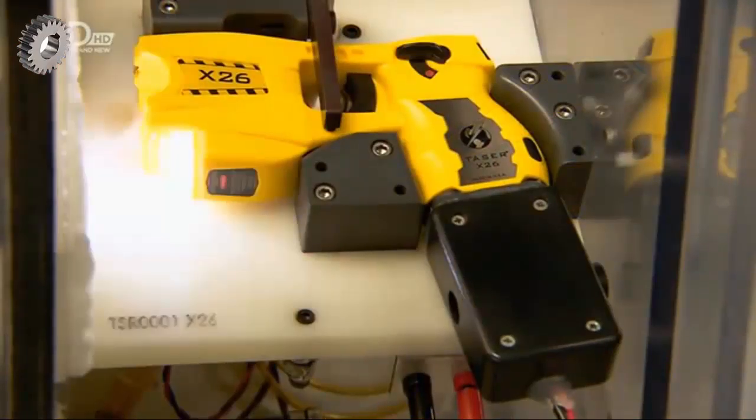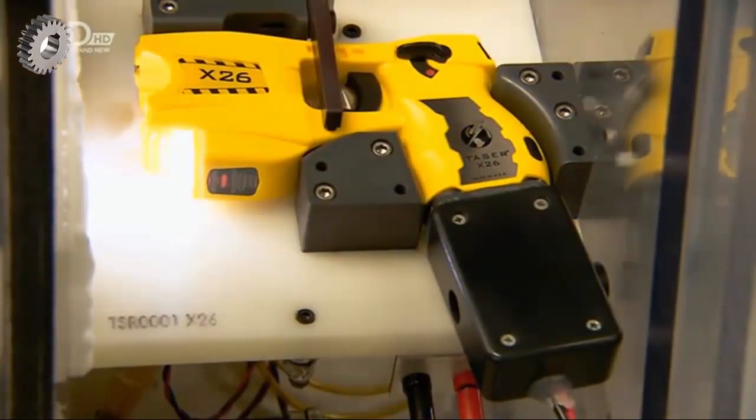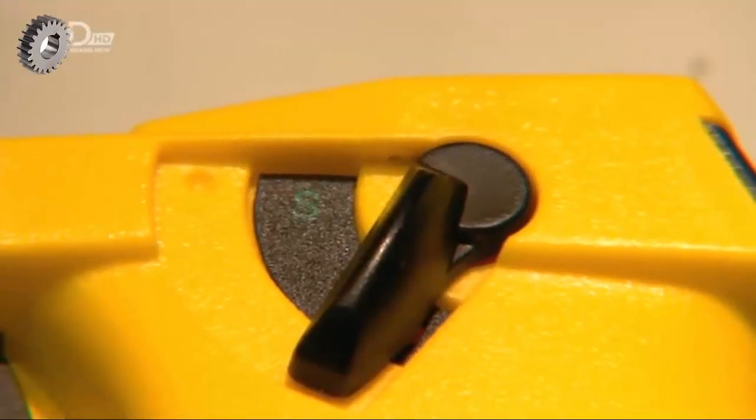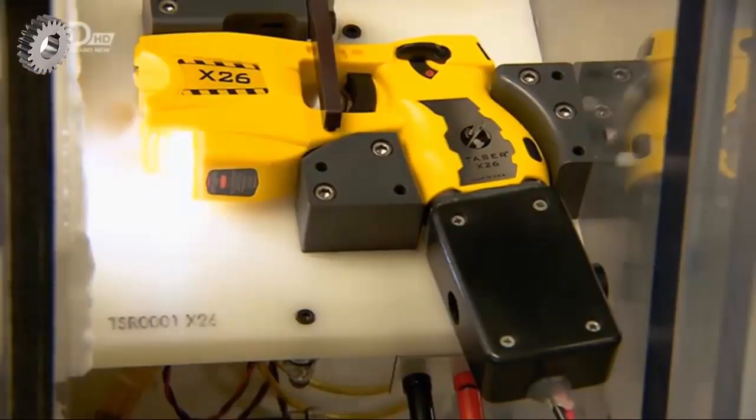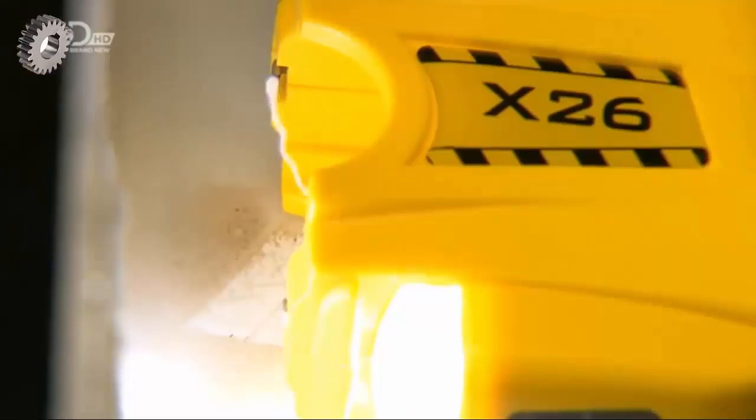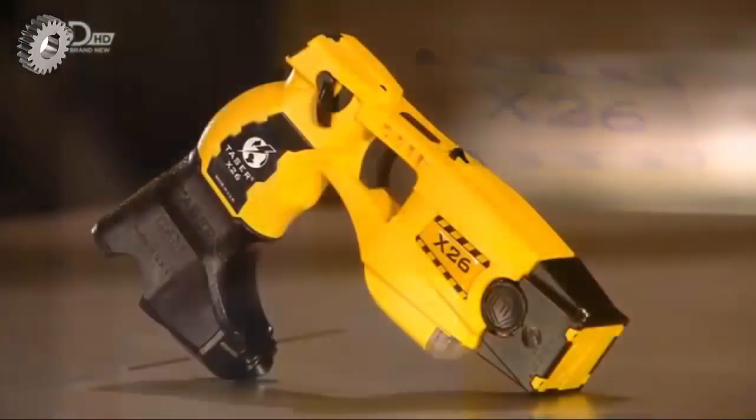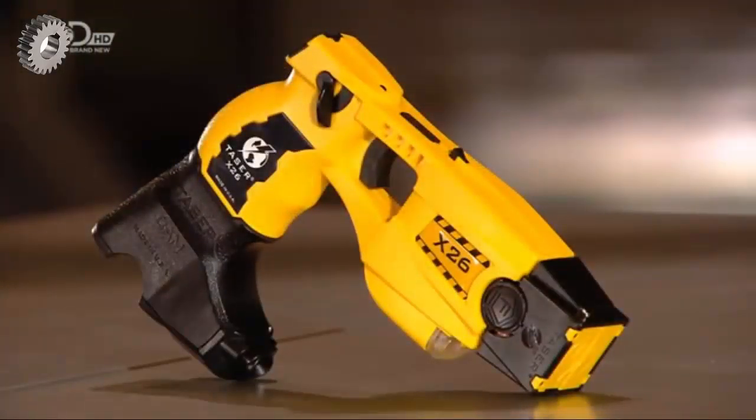In a test chamber now, they activate the taser without the air cartridge. Without the cartridge, the taser works as a handheld stun gun to zap the target directly. Once it meets the tester's approval, this taser is ready for deployment.